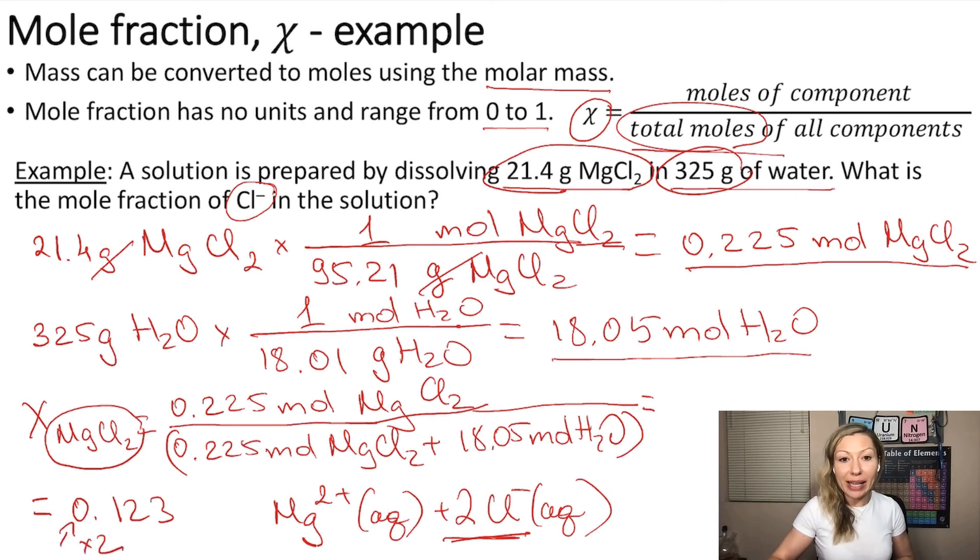So if you multiply this by 2, you get 0.246 as your final value for the mole fraction of chloride ions. I hope this makes sense. See you in the next video.